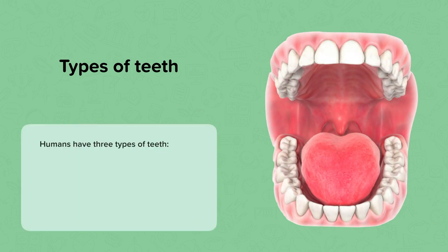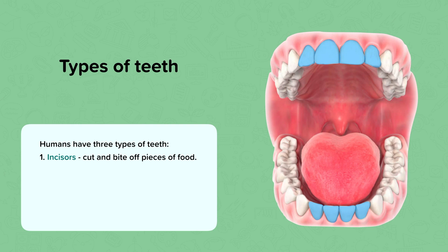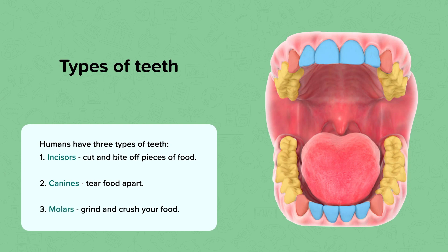Types of teeth. You may have seen in your mouth that your teeth don't all look the same. This is because we have three types of teeth. The teeth at the front of your mouth are known as incisors, and these are important for cutting and biting off pieces of food. The teeth next to the incisors are known as the canines, and these are a bit sharper and pointier and they're needed for tearing apart the food. At the back of your mouth you have teeth that aren't quite as tall and are slightly flatter — these are called molars, and these are important for grinding and crushing your food as you chew. Our different types of teeth are all involved in breaking down food into smaller pieces in different ways.